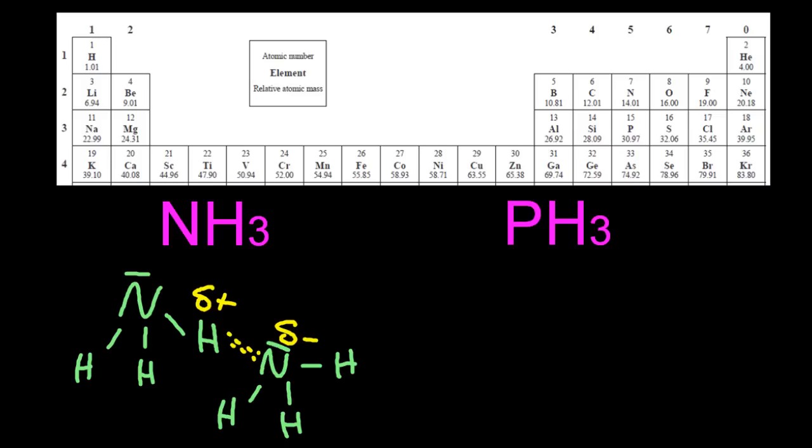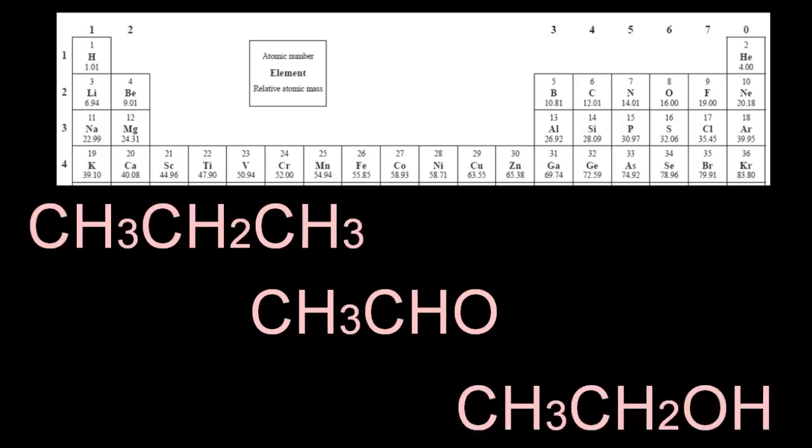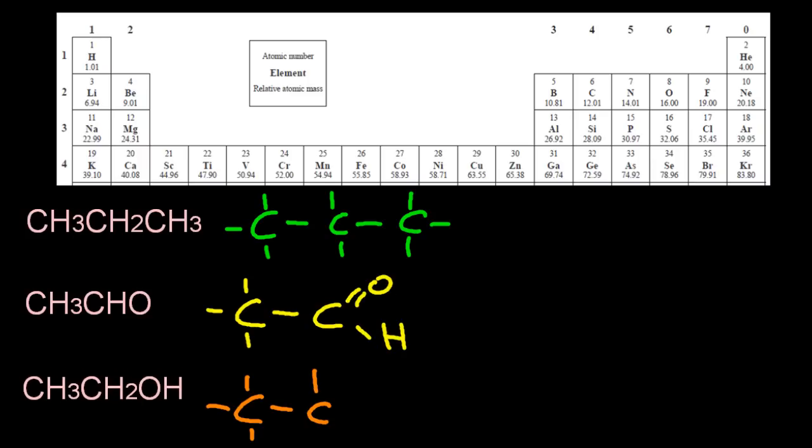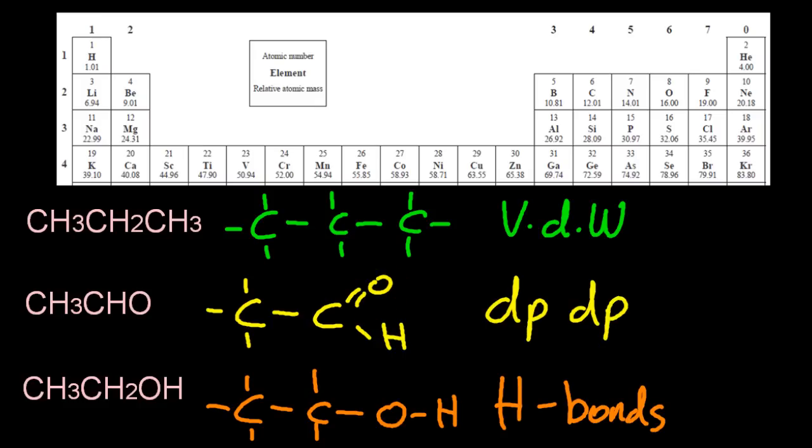These three chemicals - well, the top one is propane, it's an alkane. The second one is ethanal, and the final one is ethanol. Now their molar masses are about the same. The top one only has van der Waals. The middle one's dipole-dipole from that C double bond O, and hydrogen bonds on the final one. So how do you think the pattern of the boiling points is going to go? Well, the lowest boiling point is at the top, and the highest is at the bottom. Finished.